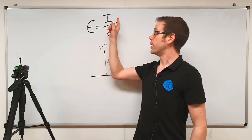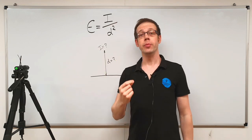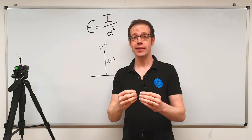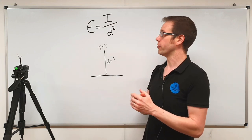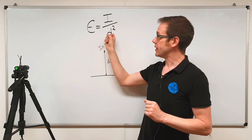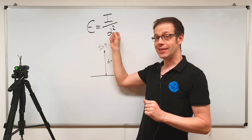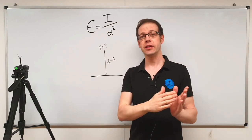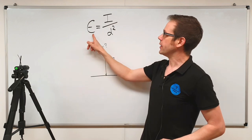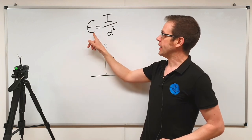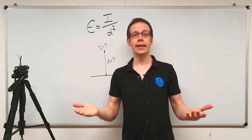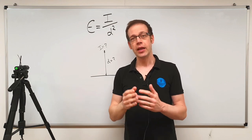So just a brief reminder: I is the luminous intensity of a light source — in other words how bright it is, how much light it's giving off in a given direction. D is the distance that the light source is from the surface that it's illuminating. And E is the illuminance — in other words how brightly lit a given surface is.